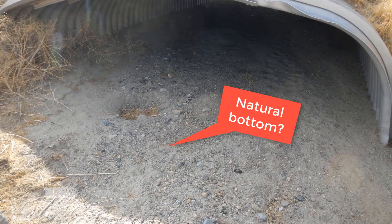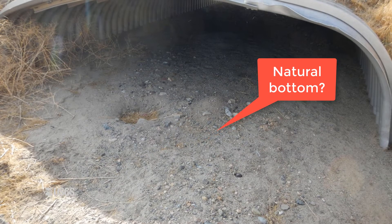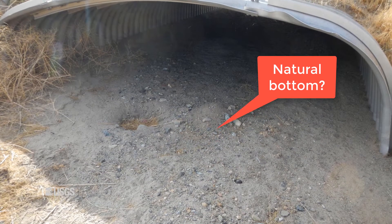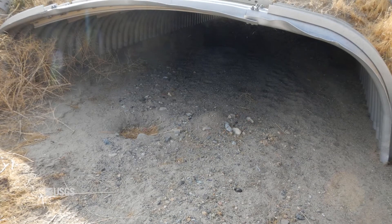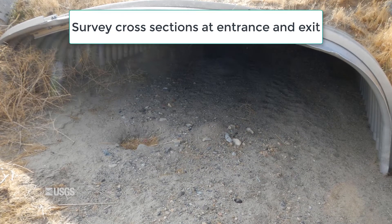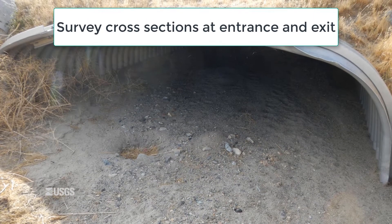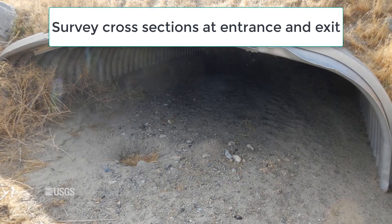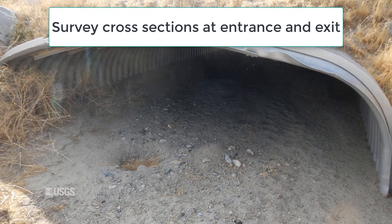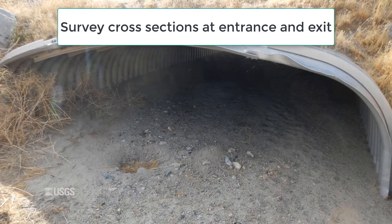Some culverts actually have natural bottoms. In such situations, a cross section needs to be surveyed at both the culvert entrance and exit. An average elevation will be used for the invert.